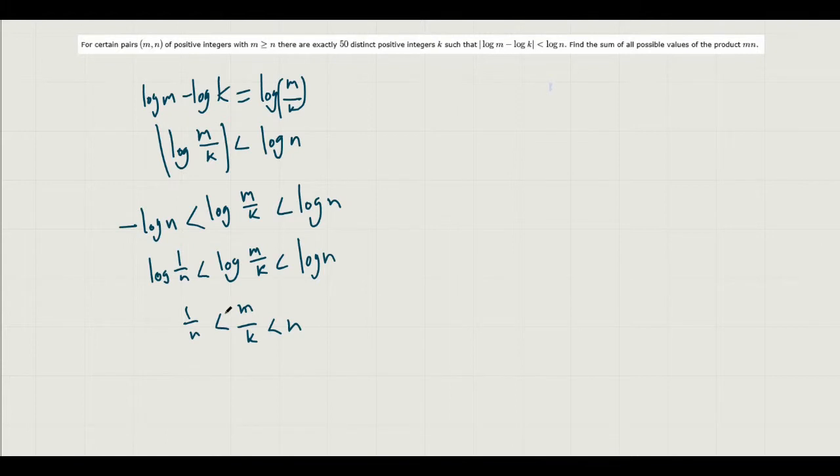So knowing this identity, we can actually do this. And then from here we can actually take out the logs to get 1 over n is less than m over k is less than n. So you can pause the video, try to solve it again just using this, and yeah, okay.